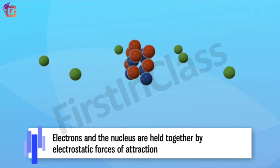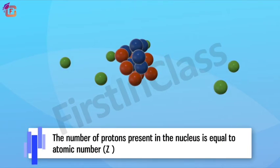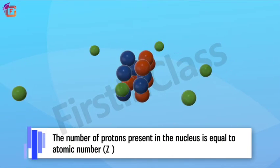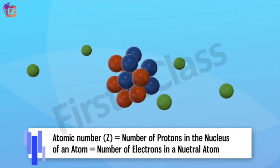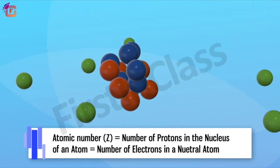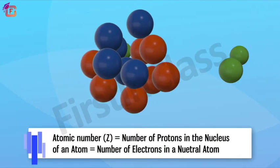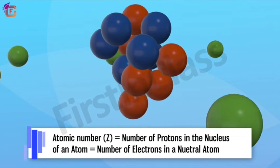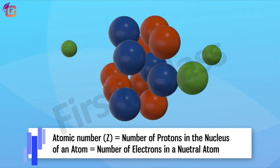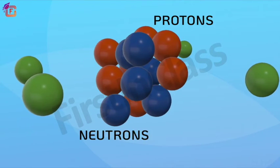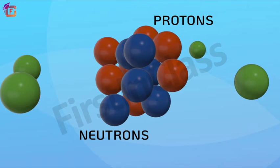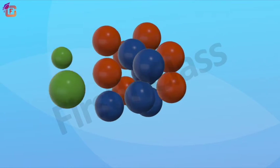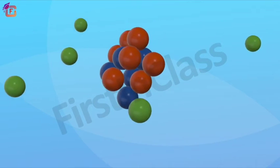The number of protons present in the nucleus is equal to atomic number Z. Atomic number Z equals the number of protons in the nucleus of an atom, which equals the number of electrons in a neutral atom. Protons and neutrons present in the nucleus are collectively known as nucleons.